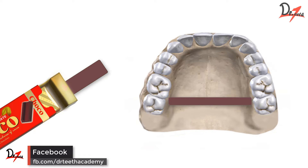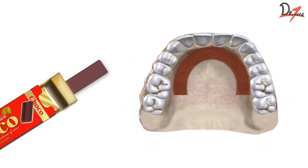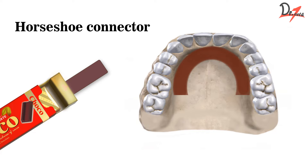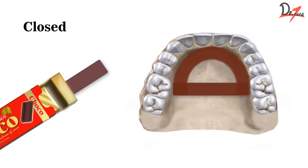If I take this bar and stretch it, it will be a palatal strap. If I convert it into a U shape, that will be a horseshoe connector. And if I close the end of this U shaped connector, that will become a closed horseshoe connector.